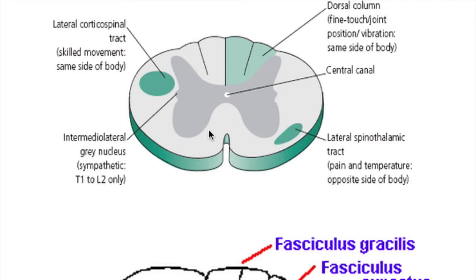B12 deficiency mainly affects the posterior column, the posterior spinothalamic tract, and the lateral corticospinal tract. The posterior column is an ascending tract and the lateral corticospinal tract is a descending tract, but both run laterally. The posterior column runs laterally up to the medulla, carrying fasciculus cuneatus from the upper body and fasciculus gracilis from the lower body.